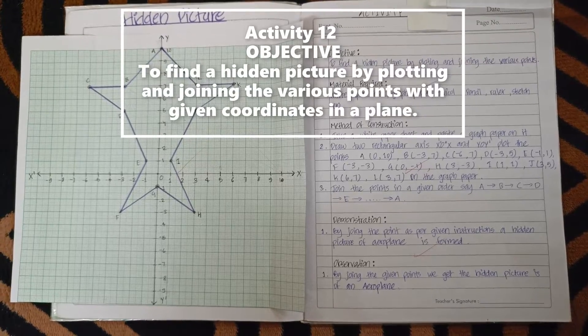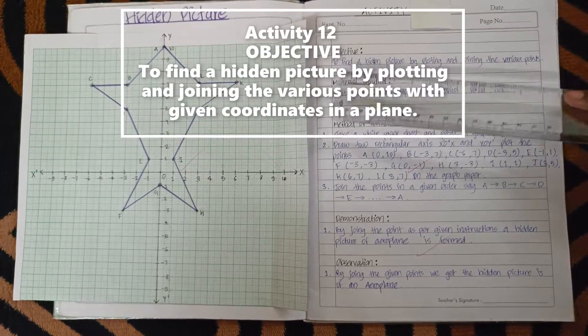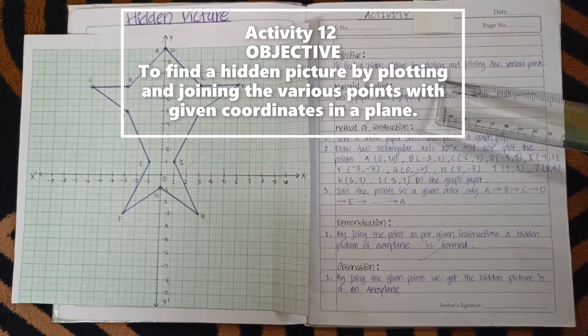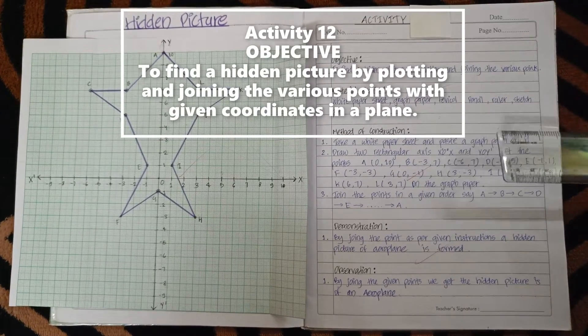Today, we will perform an activity of class 9 whose objective is to find a hidden picture by plotting and joining the various points on a Cartesian plane.